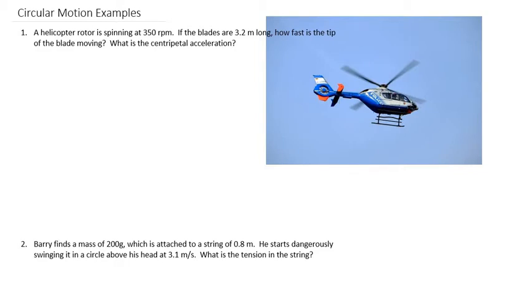Let's do some actual examples with problems solving for circular motion type of things. The first one is a helicopter rotor is spinning at 350 rpm or rounds per minute. If the blades are 3.2 meters long, how fast is the tip of the blade moving and what is the centripetal acceleration?